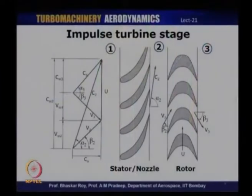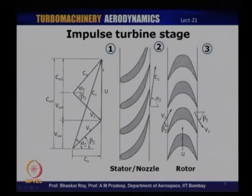Let us look at these two special cases. In the impulse turbine stage, VW2 will be equal to minus VW3 — if that is so, then the degree of reaction becomes 0 and such a turbine is an impulse turbine stage. We have VW3 and VW2 which are opposing each other and equal in magnitude. That is when we have degree of reaction as 0. The physical implication of this is that in a degree of reaction 0 turbine, there is nothing much happening in the rotor as far as enthalpy drop is concerned — the rotor simply deflects the flow and there is no change in the enthalpy in the rotor, and that is why degree of reaction is 0.